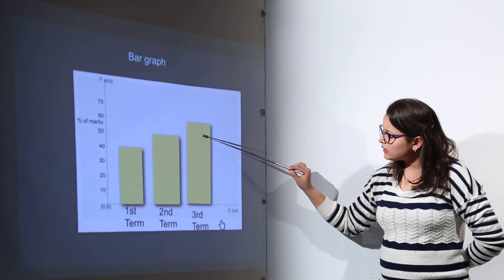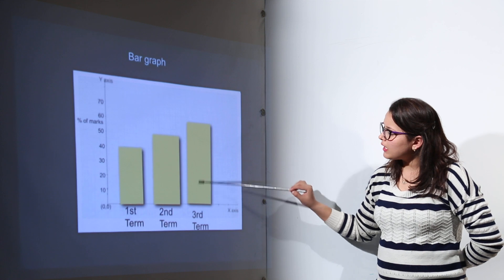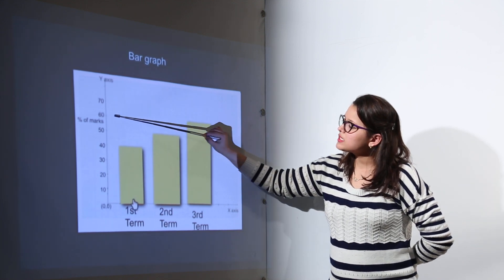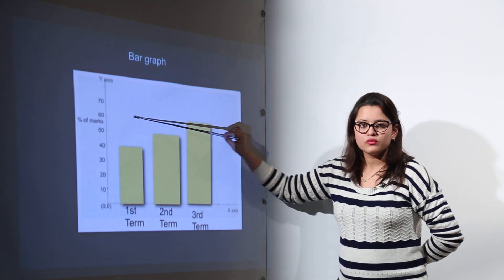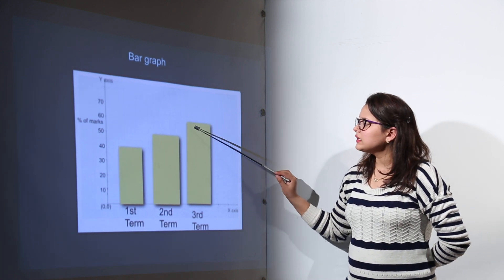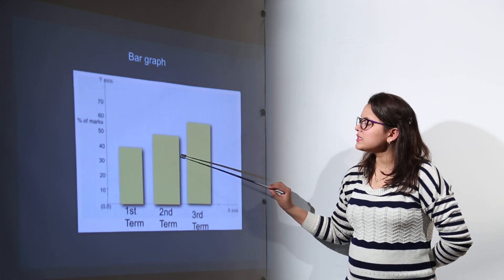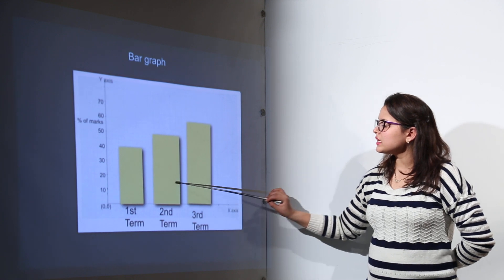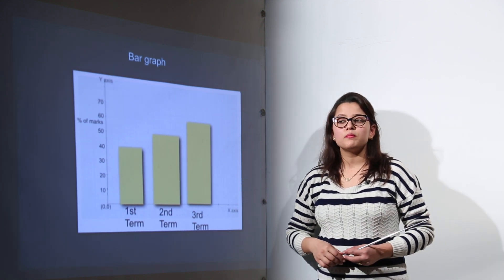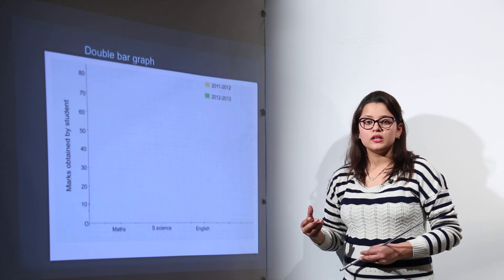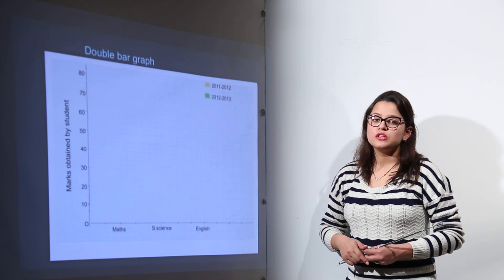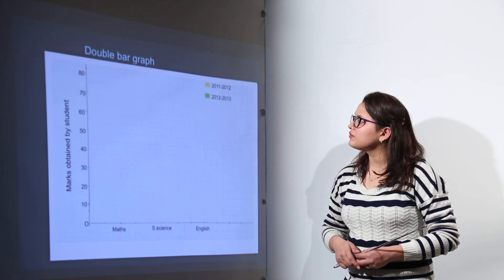Moving on to the third term, we can see the student has reached 60%. The third bar is representing that the student has improved compared to the first and second term. So this is how we can make the comparison of any quantity, the comparison between any categories, using the bar graph representation.